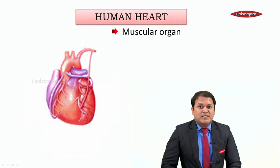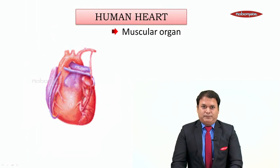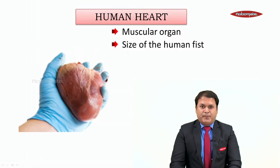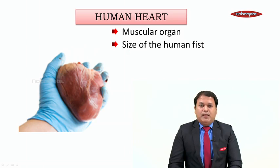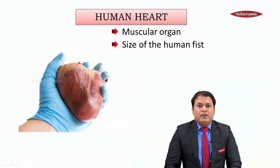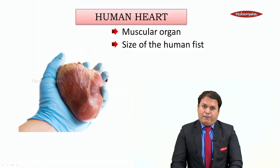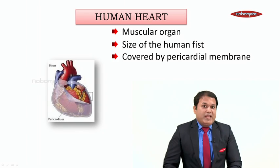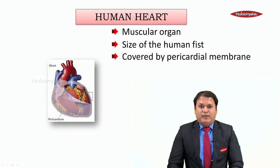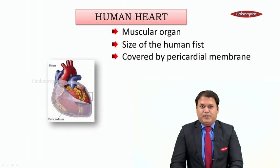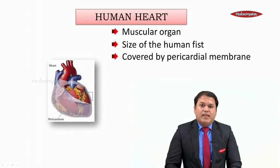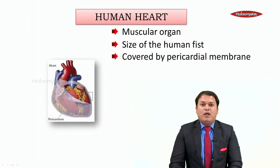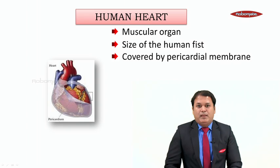The human heart is a muscular organ, which means it is completely made up of muscles. The size of the heart is that of the human fist approximately. Since heart is a very important organ, it requires protection. So our heart is covered by a covering which is called as a pericardial membrane.